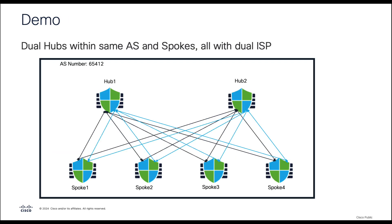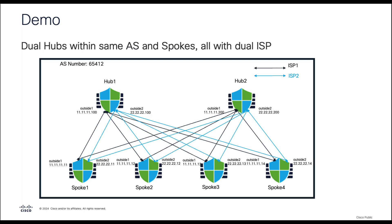In this demonstration, we'll take a look at a dual hub-and-spoke deployment within the same AS number, all using dual ISP. We have outside 1 interfaces configured on all hub and spoke devices along with outside 2, and we will leverage loopback interfaces for sourcing the tunnels.